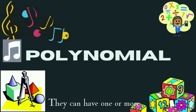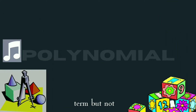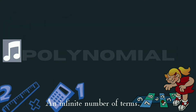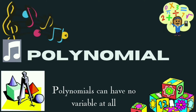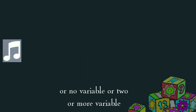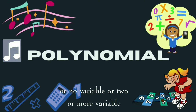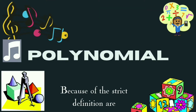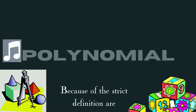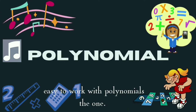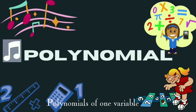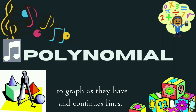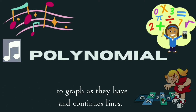They can have one or more terms, but not an infinite number of terms. Polynomials can have no variable at all, one variable, or two or more variables. Polynomials of one variable are easy to graph as they have smooth and continuous lines.